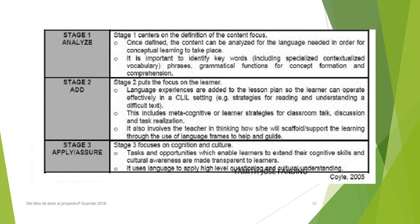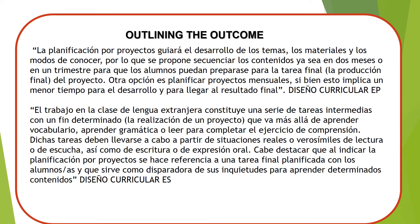In stage three it's apply and assure, and here we focus on cognition — thinking skills — and culture: the other two C's. We need to deliver tasks and opportunities which enable learners to extend their cognitive skills and cultural awareness, and that is made transparent to the learners. So we need to apply a high level of questioning and cultural understanding. And here is where we have to start working with projects, taking into account everything we have already said.